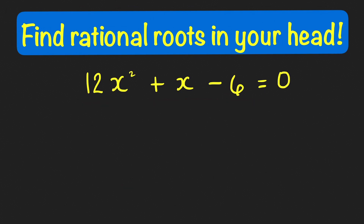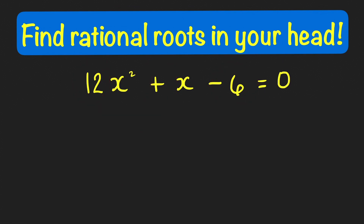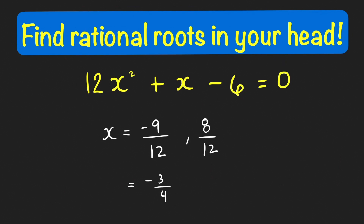We think of factors of the product of 12 and negative 6, which is negative 72, whose sum is the negative of the coefficient of x, so whose sum is negative 1. The factors of negative 72 whose sum is negative 1 are negative 9 and 8. Therefore, the solutions are negative 9 over 12 and positive 8 over 12, which simplify to negative 3 fourths and 2 thirds.